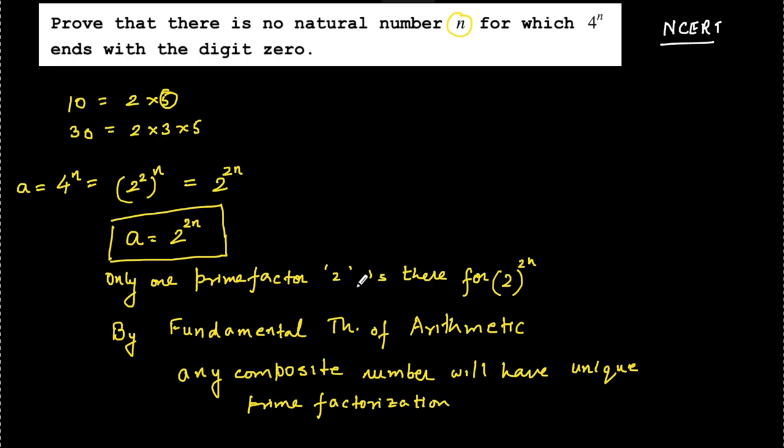So here we say that the only prime factor available is 2. There is no 5 in it, so there is no chance that this number would be divisible by 5.